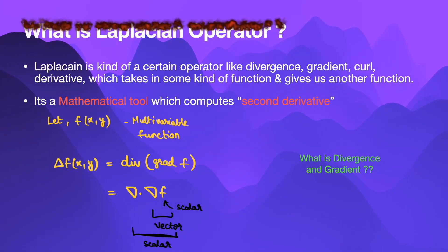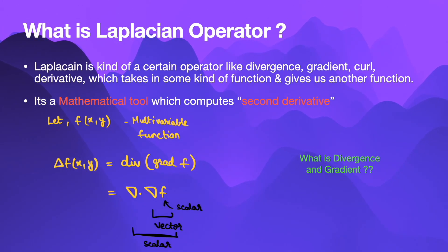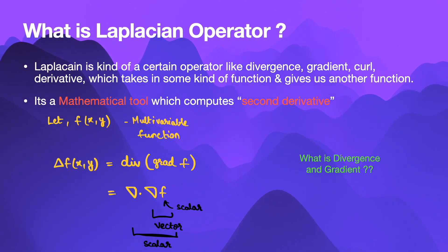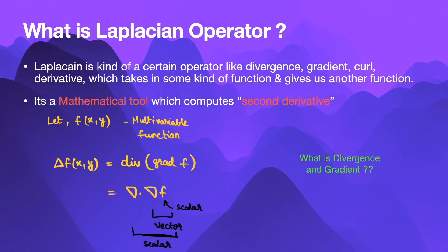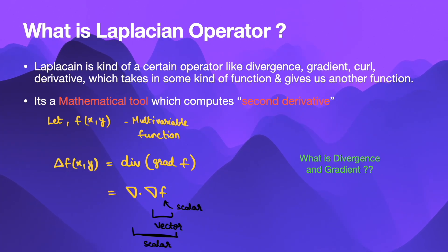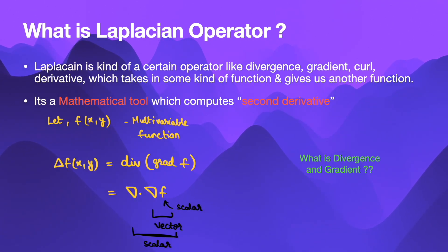Laplacian is a certain operator like divergence, gradient, curl, or derivative, which takes in some kind of function and gives us another function. Specifically, it's a mathematical tool which computes the second derivative. Let f be a multivariable scalar function; then the Laplacian of f is defined as the divergence of the gradient of f. The output of Laplacian is a scalar because f is a scalar function, the gradient of a scalar is a vector, and the divergence of a vector is a scalar.